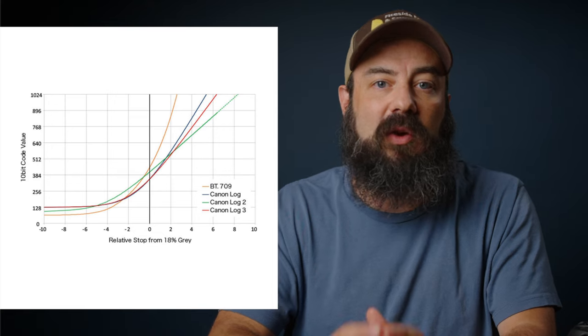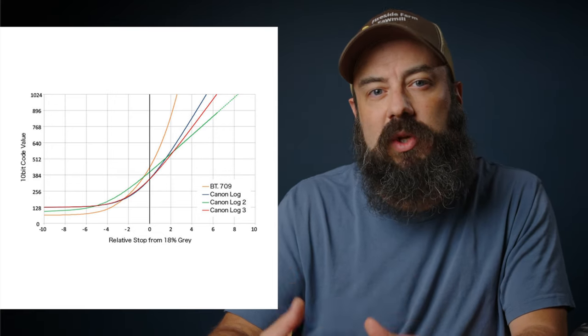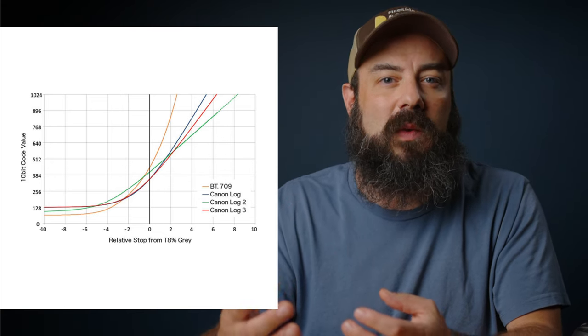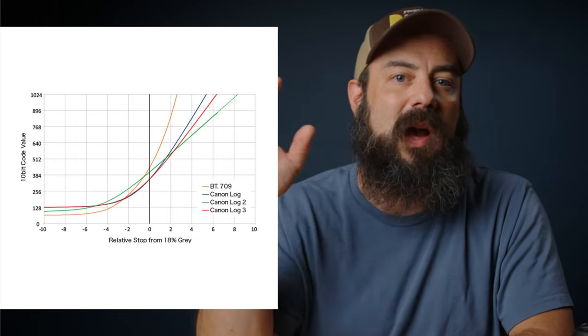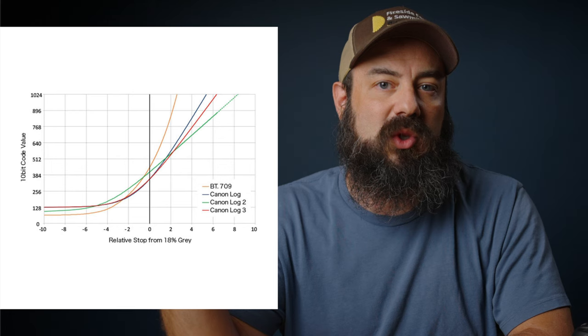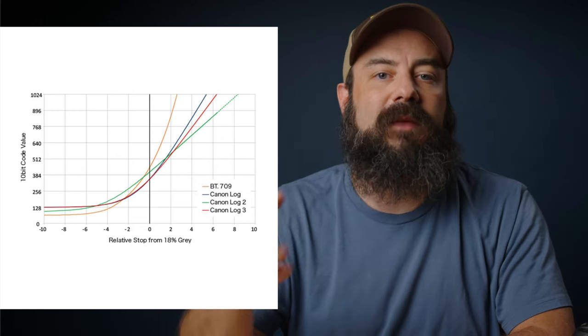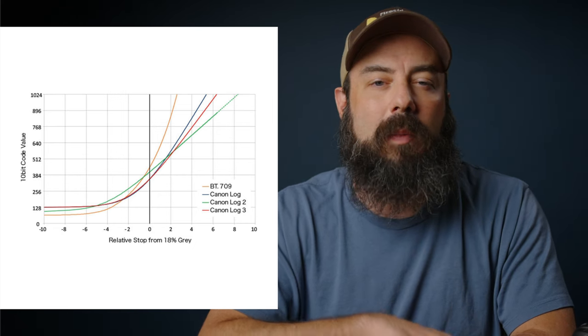If you take a look at the graph of the Canon log curves, you can use this graph to sort of expect what you'll see in terms of results. If you look in the upper right part of the graph, you can see that C-Log2 should perform better than C-Log and C-Log3 in the highlights. And if you look at the bottom left into the shadows, they're pretty similar. So that's kind of what I expect to see in terms of dynamic range.